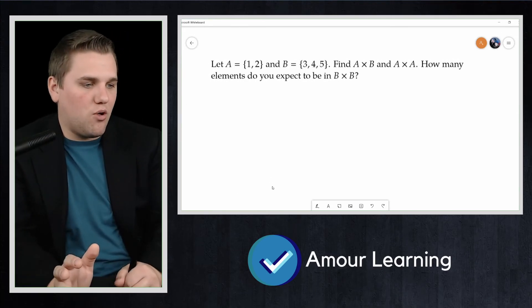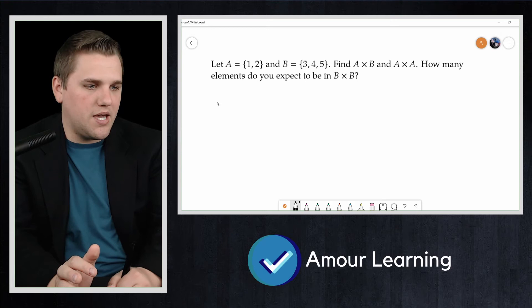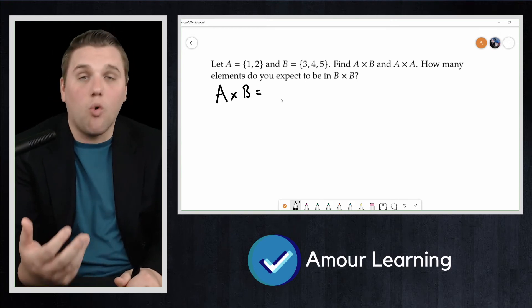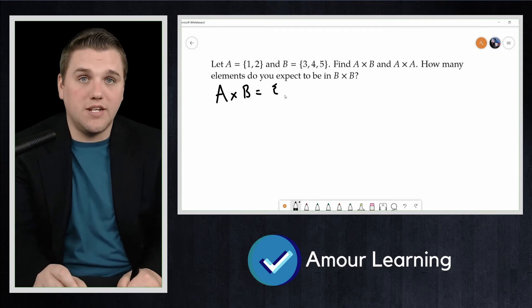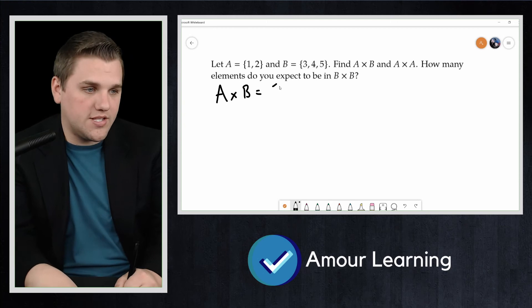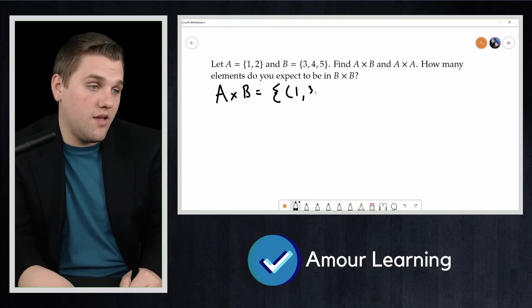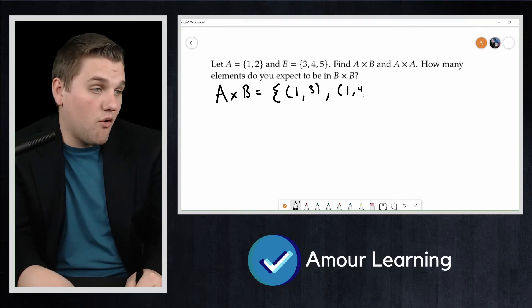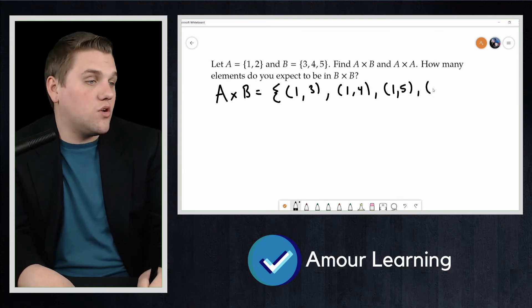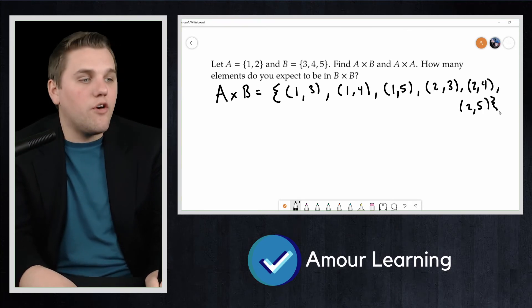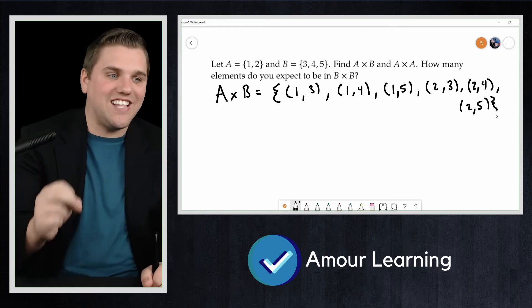In this example, let's start with A cross B. So A cross B is defined as all the coordinates where the first element is in A and the second element is in B. Well, there are many ways of doing this. We could do (1,3), or we chose 1 from A and 3 from B. We could do (1,4), (1,5), (2,3), (2,4), and then (2,5). Those are all the coordinates in that set.